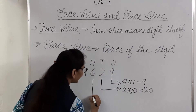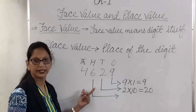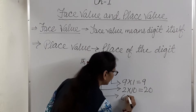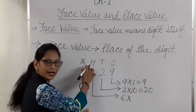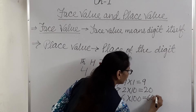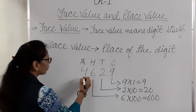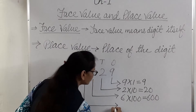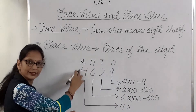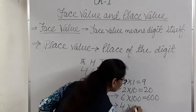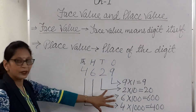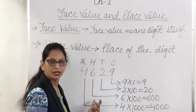What is the place value of 6? Place value of 6 is 6 multiplied by its place. 6 is in the hundreds place. So 6 multiplied by 100 is equal to 600. What is the place value of 4? Place value of 4 is 4 multiplied by 1000, since 4 is in the thousands place. So 4 multiplied by 1000 is equal to 4000.